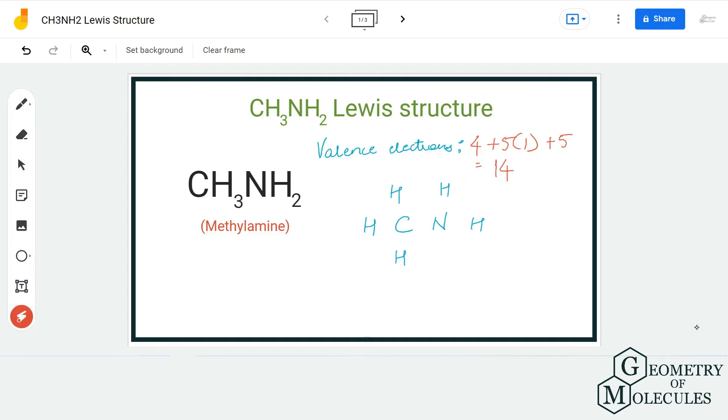Now we are going to place carbon and nitrogen next to each other, and then we will start the arrangement of hydrogen atoms around carbon atom first. As it says CH3, that means carbon is attached to three hydrogen atoms, and then it is attached to this NH2 group. The arrangement will look something like this.